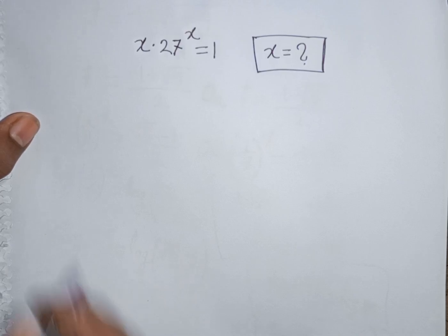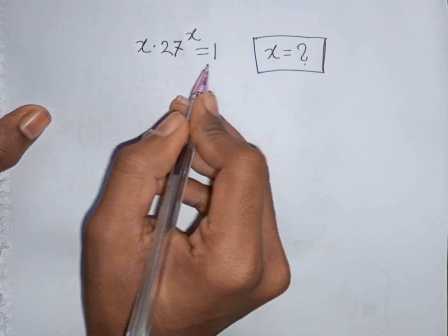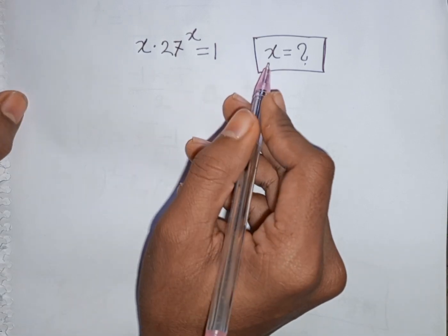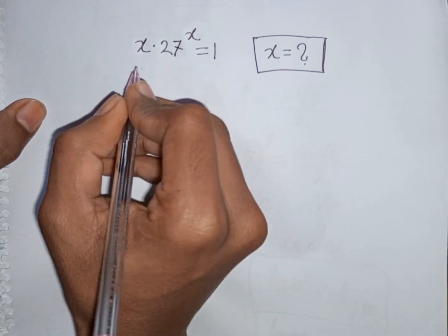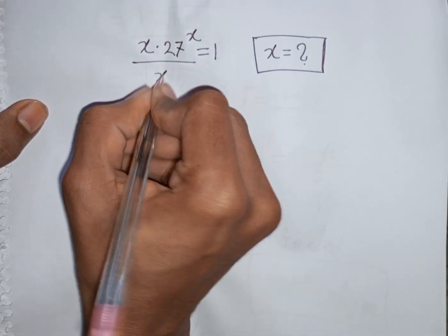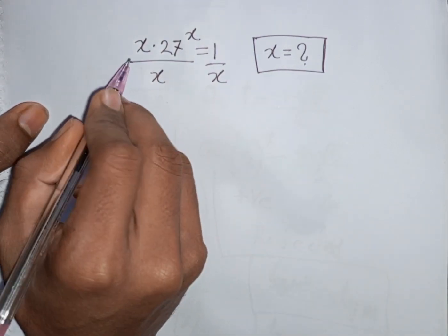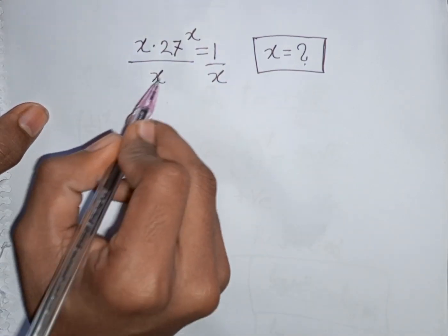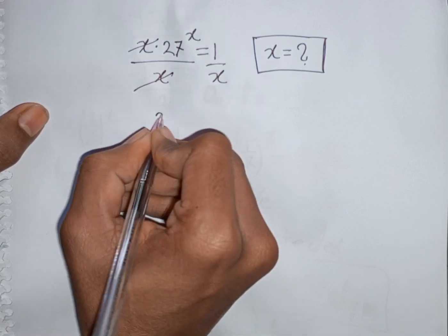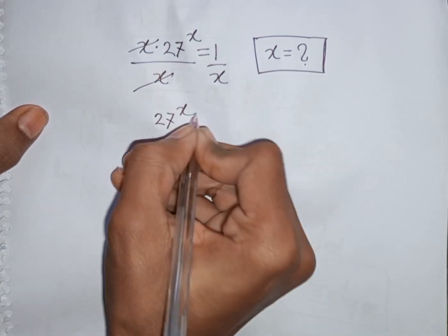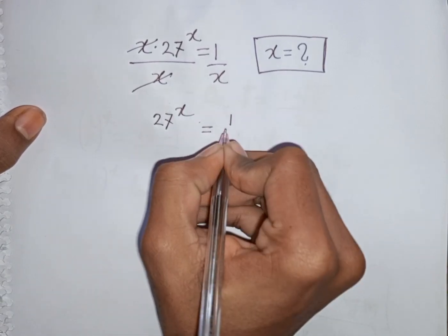How to solve x times 27 power x is equal to 1. Find the value of x. First we divide by x on both sides, and this x will be cancelled. So we have 27 power x is equal to 1 by x.